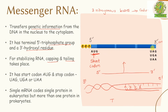Capping and tailing take place to stabilize the whole mRNA strand. Capping occurs at the 5' end, where a triphosphate group is attached — you can see three phosphate groups attached at the 5' end. Tailing occurs at the 3' end, where the RNA is extended with only adenine bases — A, A, A, A — going on. This tail portion is known as polyadenylated.